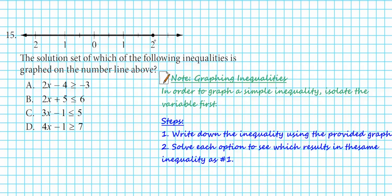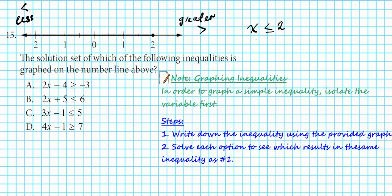The graph shows the solution region is 2 and everything to the left. Heading left means less, heading right means greater. Two is included, shown by a closed circle. So the inequality is x is less than or equal to 2. The question is: which of the answer choices, when solved for x, matches x less than or equal to 2?